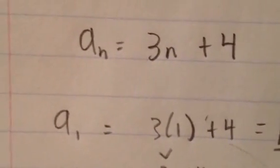So you do a1, and that would be 3 times 1 plus 4 equals 7.